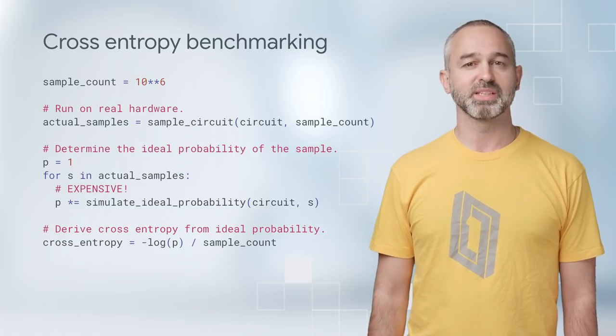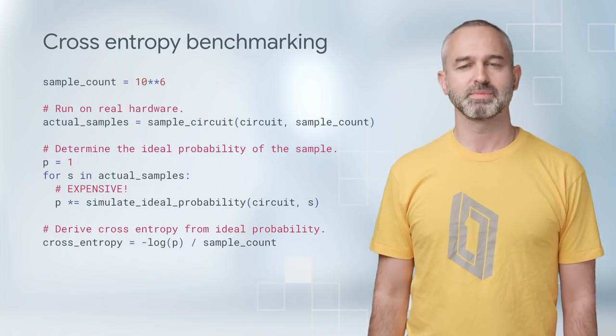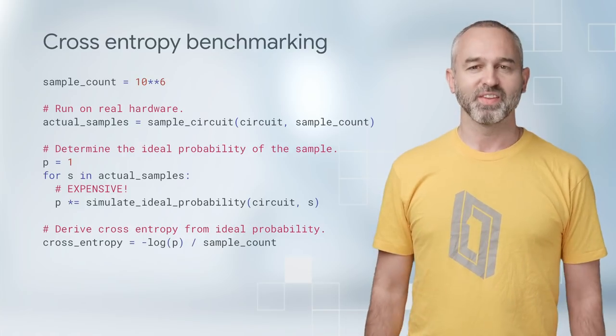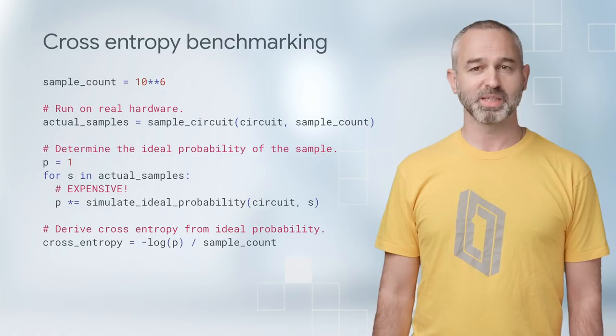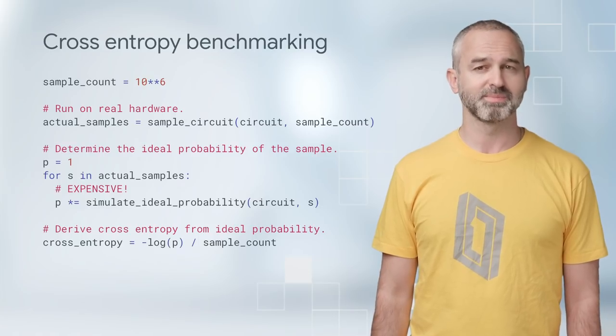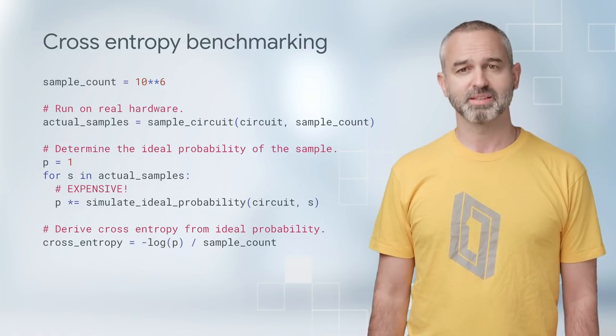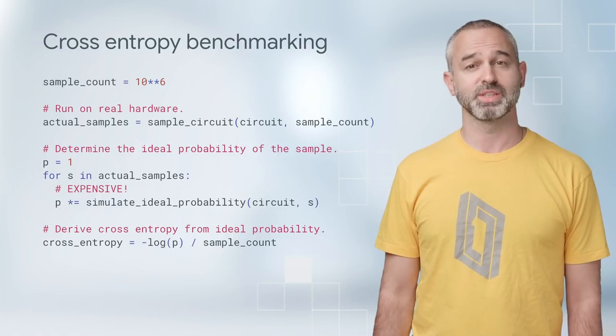First, we get around a million bit strings from the quantum computer. This takes a few seconds. Then, we use an expensive classical simulation to check if those bit strings have high probability. If this is the case, the error rate is low, and the experiment has succeeded.